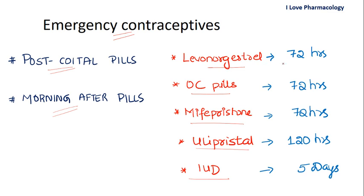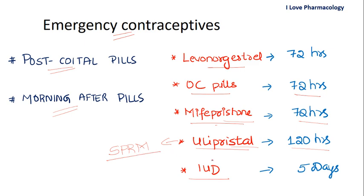Levonorgestrel should be given within 72 hours of unprotected sexual intercourse. Combined oral contraceptive pills should also be given within 72 hours. Mifepristone, a progesterone antagonist (antiprogestin), is given within 72 hours. Ulipristal, which is a selective progesterone receptor modulator (SPRM), should be given within 120 hours. An intrauterine device can be used within 5 days.